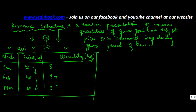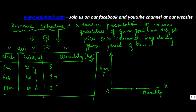Now if you form this particular demand schedule on a graph, wherein you put quantity on the x-axis and the price on the y-axis — I need to use a different scale here — let the price be 10, 20, 30, 40, 50, 60. Now let's start plotting these points.